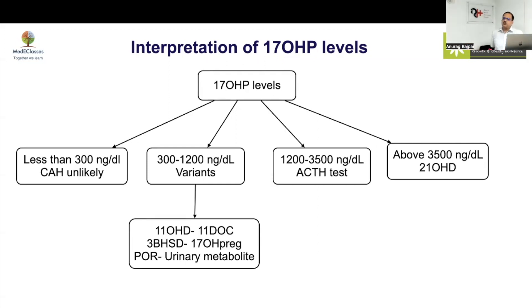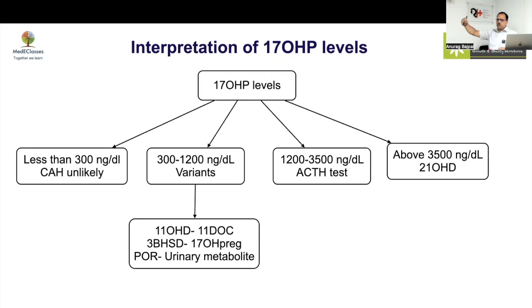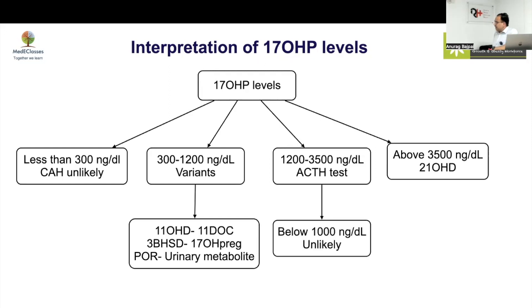If 17-OHP is between 300 to 1200 ng/dL, think of variants as a possibility — 11-hydroxylase, 3-beta-HSD become more likely. If it is between 1200 to 3500 ng/dL, you should do an ACTH stimulation test to clarify. This applies predominantly to the neonatal age group and classical forms of CAH, not PCOS where non-classical forms are more relevant.